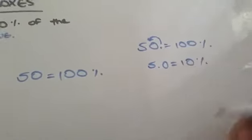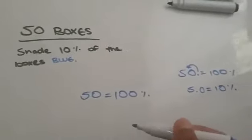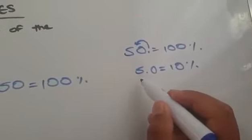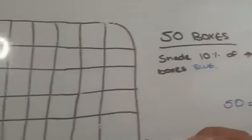You'll learn that in decimals, or you'll learn that later when I teach you guys methods. So, 10% is equal to 5. So, 5 squares need to be colored.